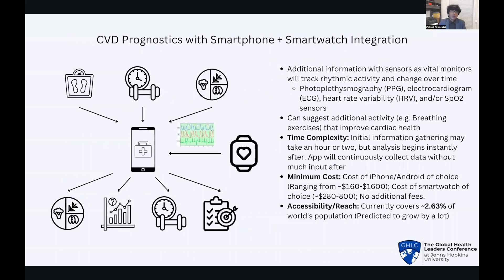Alternatively, the combination of a smartphone and a smartwatch provides enhanced capabilities. Building upon the smartphone model, this approach incorporates additional biometric data captured by the smartwatch, such as the PPG, ECG, HRV, and SpO2 sensors. Incorporating sleep tracking also helps identify sleep problems, which is often an indication of heart failure. By leveraging these comprehensive data points, the model can offer a more detailed analysis of cardiovascular health.